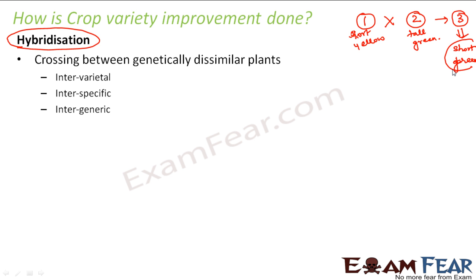By hybridization we get some characteristics of one plant and some other characteristics of the other plant, and that is how we can get our desired characteristics. Now, hybridization can be intervarietal, interspecific, and intergeneric. To understand what those terms mean, we need to look at taxonomy for plants. Just as we have a ranking — cells form tissues, tissues form organs, organs form organ systems — there is a similar order for naming plants scientifically.